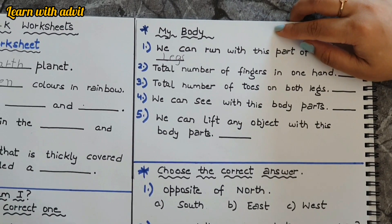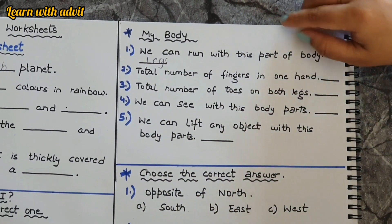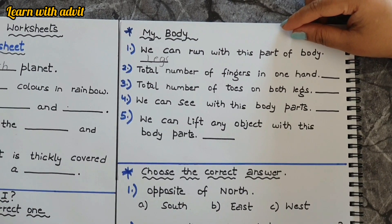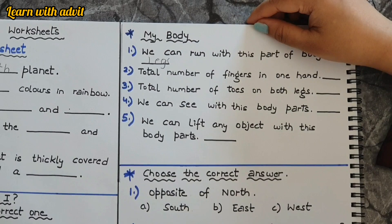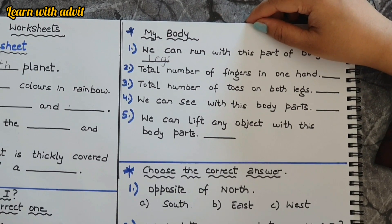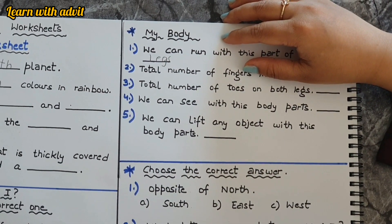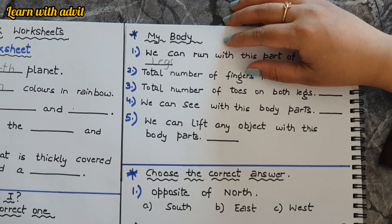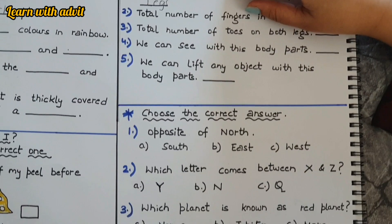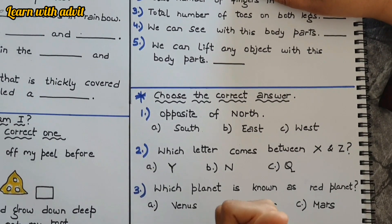And in two hands, ten, very good. Total number of toes on both legs are ten, very good. We can see with this body part, eyes. Very good. We can lift any object with this body part, arm or hand. Which body part helps us to smell? Nose, very good.